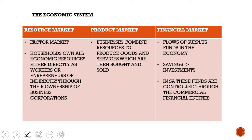The factors of production are land, labor, capital, and entrepreneurship. In return, households receive salaries and wages, interest, profit, and rent. The product market is where businesses combine resources to produce goods and services, which are then sold and bought.